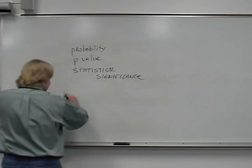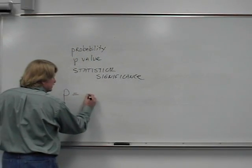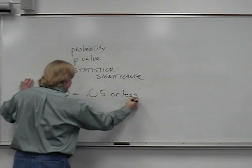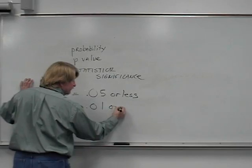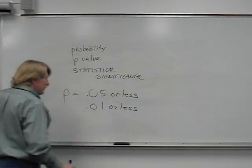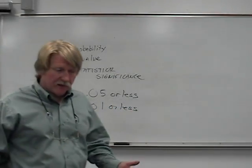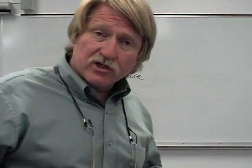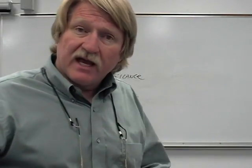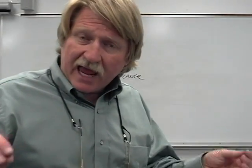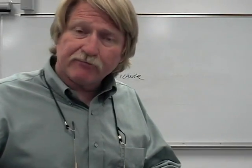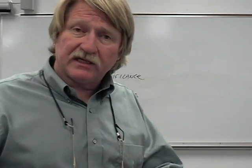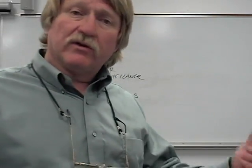We're looking for a p-value of .05 or less. Once in a while we get a p-value of .01 or less, and that's incredible. A p-value of .05 or less says that if the data went in the direction you predicted, the probability that it happened by chance is 5% or less. In other words, we have a 95% level of confidence in what we're looking at.